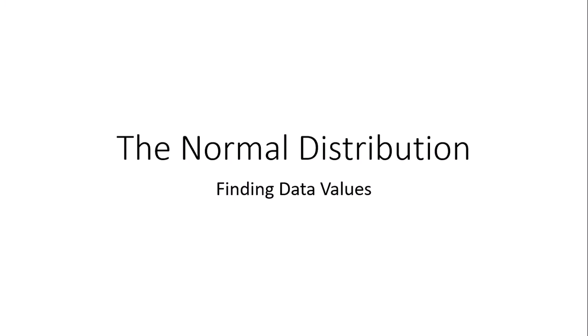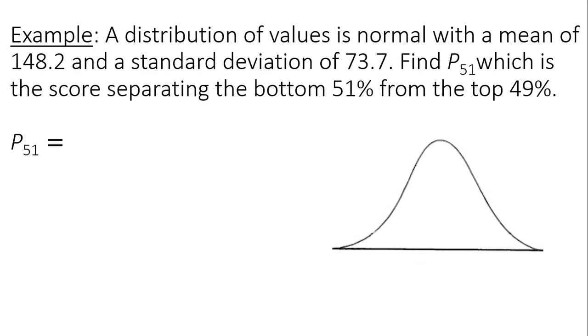This is a video on how to use probabilities from the normal distribution to find data values. The distribution of values is normal with a mean of 148.2 and a standard deviation of 73.7.